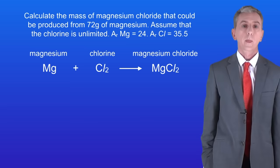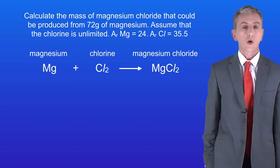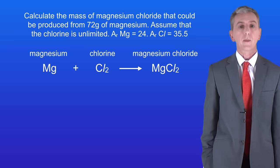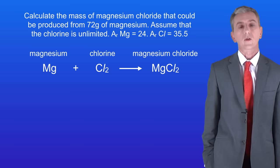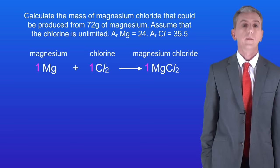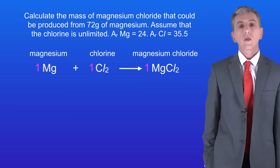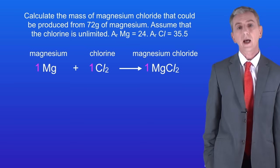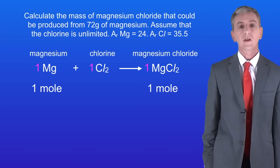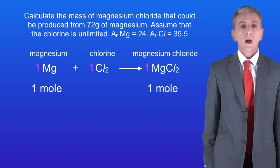Calculate the mass of magnesium chloride that could be produced from 72 grams of magnesium. Assume that the chlorine is unlimited. So how do we tackle a question like this? First we need to look at the chemical equation. On the left hand side we've got magnesium and chlorine, and on the right hand side we've got magnesium chloride. There are no large numbers in front of these chemicals — in chemistry, if there's no large number that means one. So in this case I'm going to show the numbers even though we don't normally write the number one, as that's going to help you see what's going on. These numbers tell us that if we had one mole of magnesium we could make one mole of magnesium chloride. We're ignoring the chlorine because the question tells us it's unlimited, so we don't need to consider it.